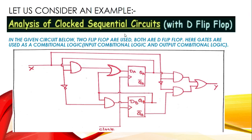Now let's proceed to an example to make the concept clear. We will analyze a clocked sequential circuit with D flip-flops. In the given circuit, two D flip-flops are used. Gates are used as combinational logic for both input and output combinational logic. We will solve this using our analysis method.